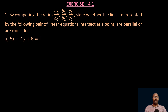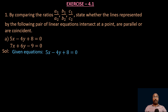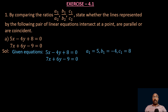Let us see the first one: 5x − 4y + 8 = 0 and 7x + 6y − 9 = 0. These are given in standard form. Comparing with a1x + b1y + c1 = 0 and a2x + b2y + c2 = 0, we get a1 = 5, b1 = −4, c1 = 8, and a2 = 7, b2 = 6, c2 = −9.